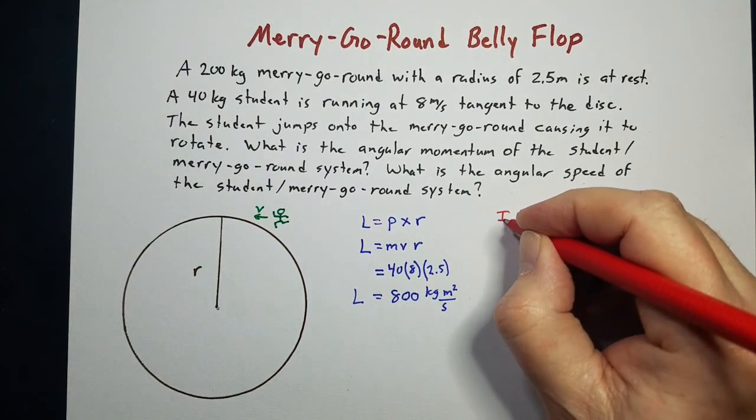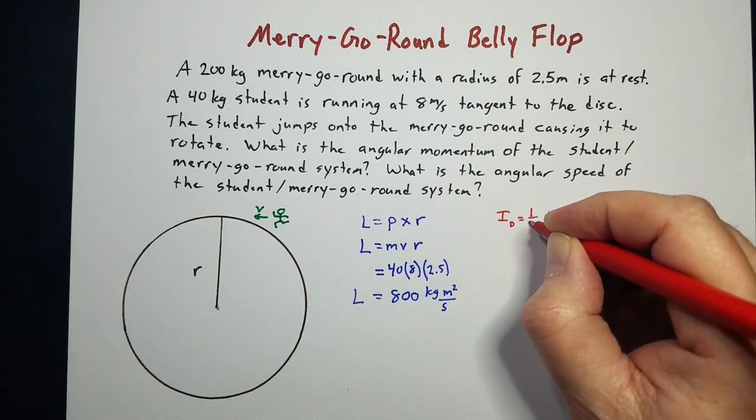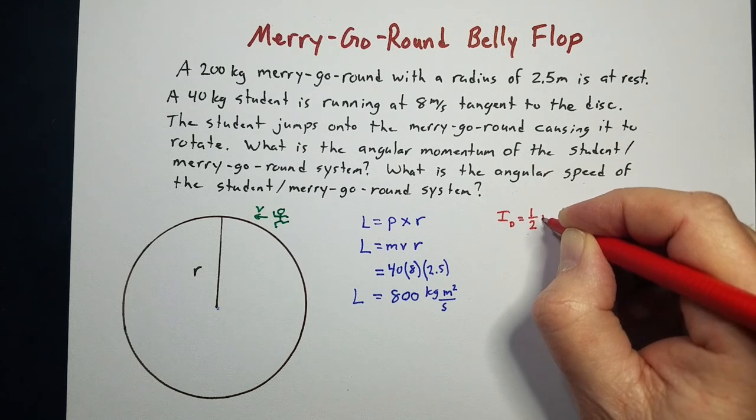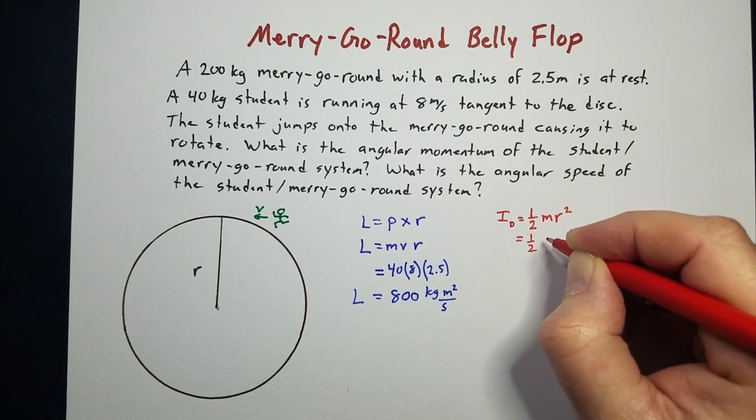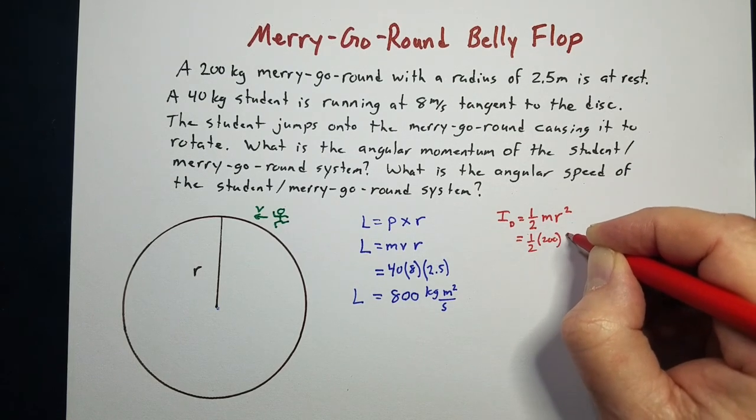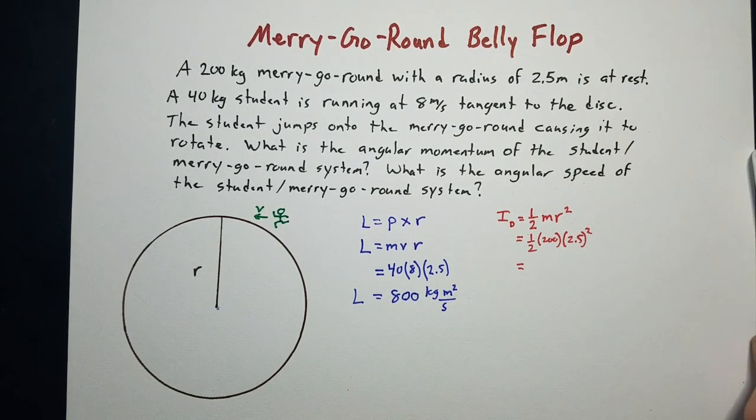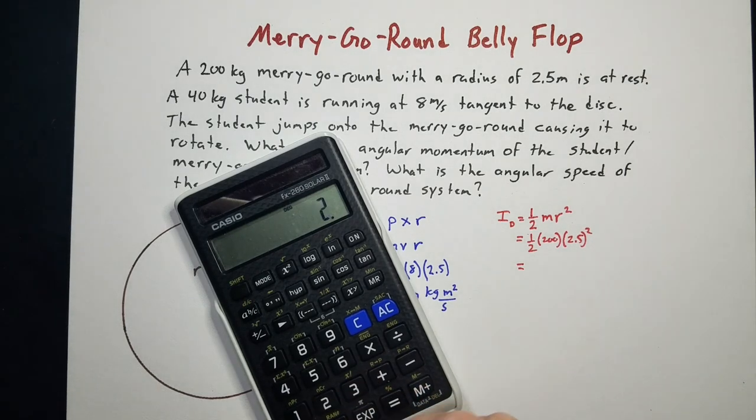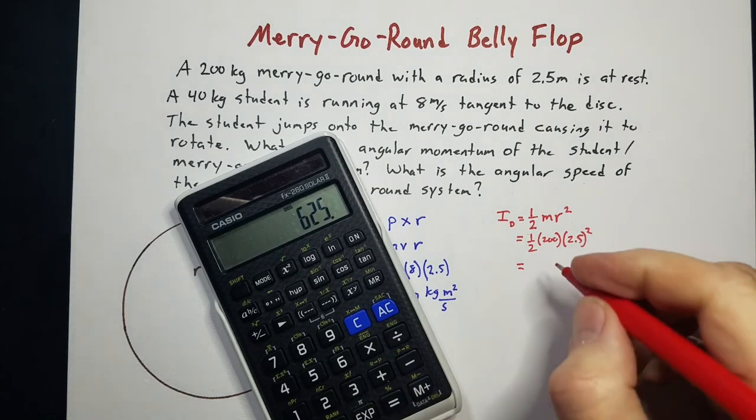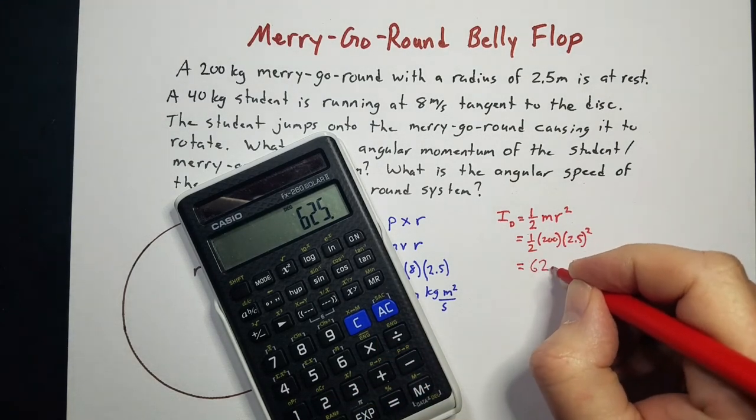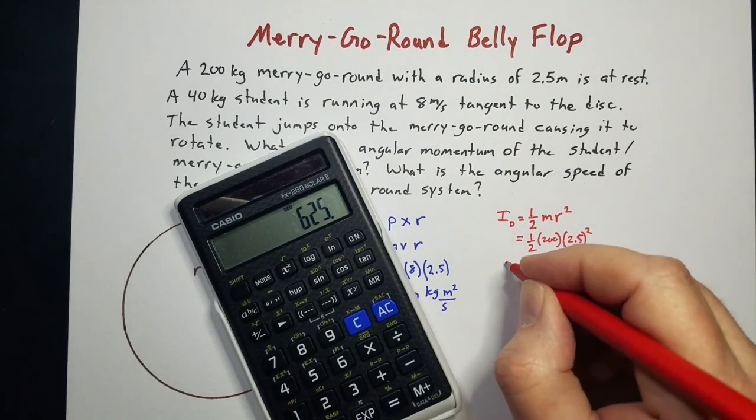The moment of inertia for the merry-go-round, that's a disk. The equation for moment of inertia of a disk is one-half the mass of the disk times the radius squared. So that'll be one-half, the mass is 200, radius is 2.5 squared. If we do that, 200 times 2.5 squared divided by 2, we get 625 kilogram meters squared for the disk.